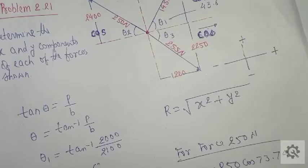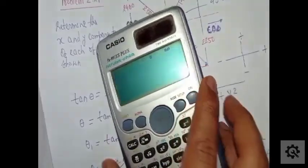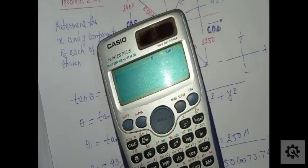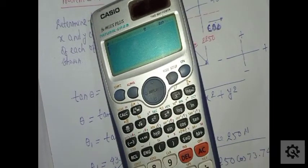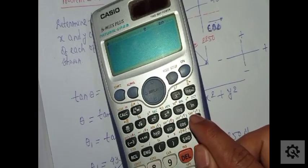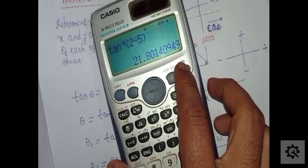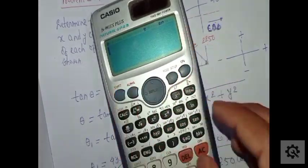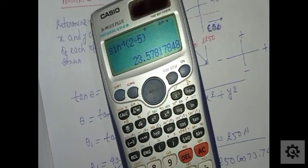One tip: how to apply inverse functions in the scientific calculator. Press the shift button, then input your value, then choose sine inverse, cos inverse, or tan inverse. For example, for tan inverse of 2 upon 5, press shift, then tan, then the value, and you will get the result.